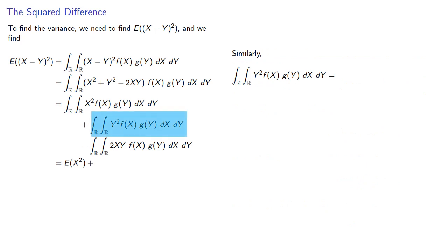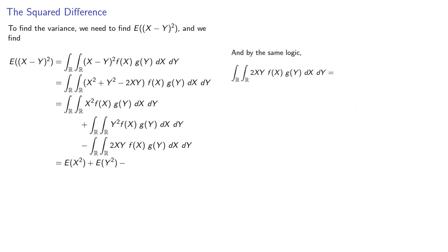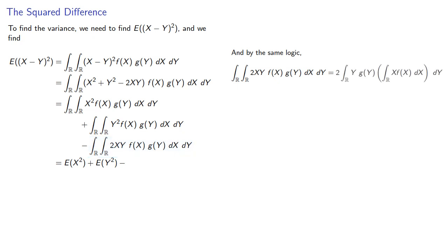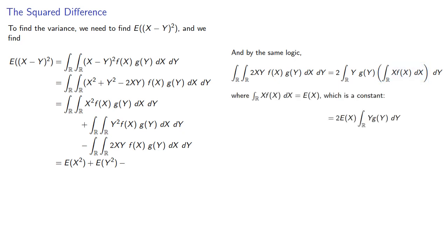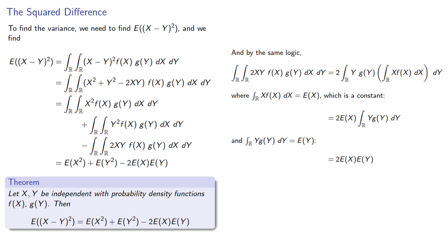Similarly, the second integral: since y²·g(y) is not dependent on x, we can remove it to the front. The remaining integral equals 1, and the integral we have left is E[Y²]. Finally, for the last remaining integral: 2 and y·g(y) are independent of x. 2 is a constant and can be removed to the front, and the inner integral is E[X], which is also a constant. The remaining integral is E[Y]. So the expected value of the square of the difference is E[X²] plus E[Y²] minus 2·E[X]·E[Y].